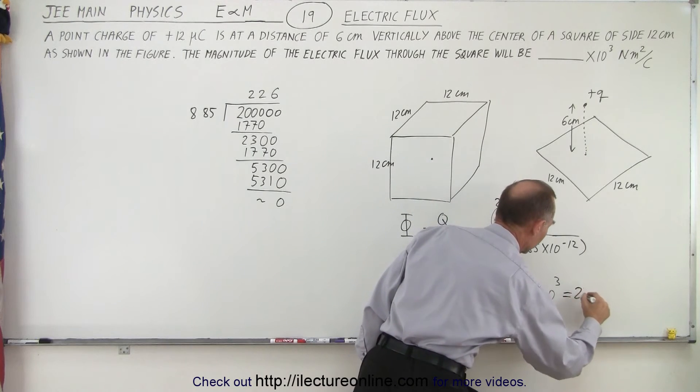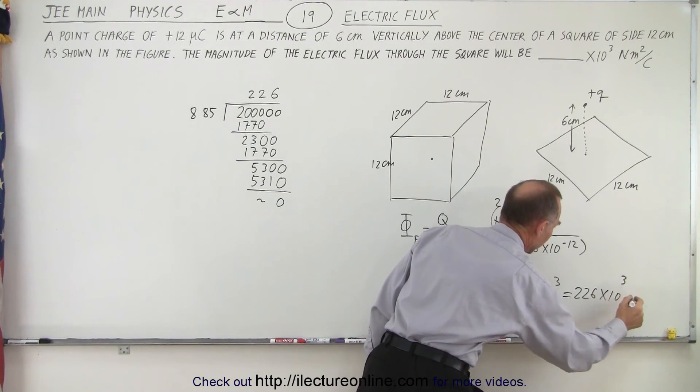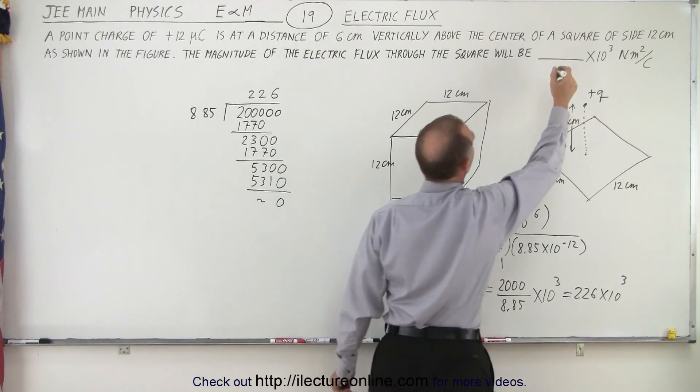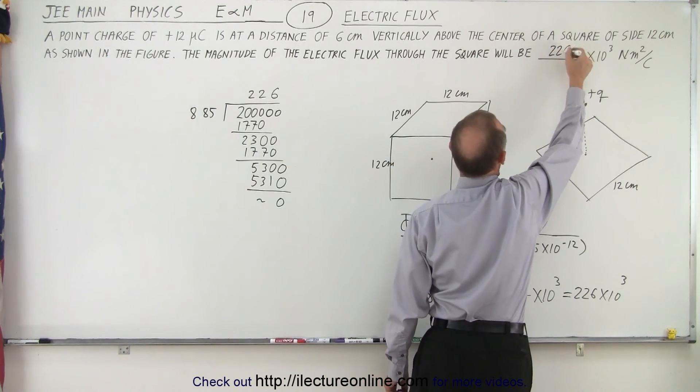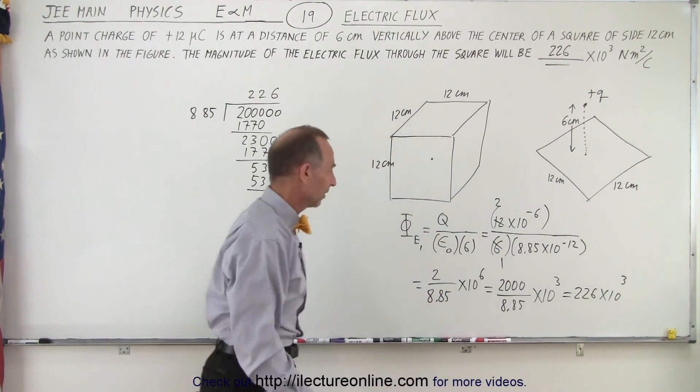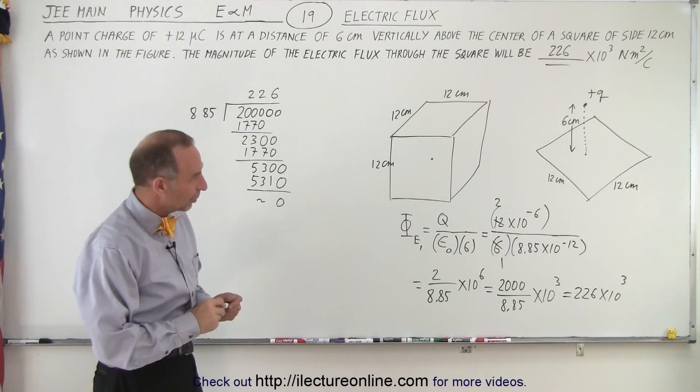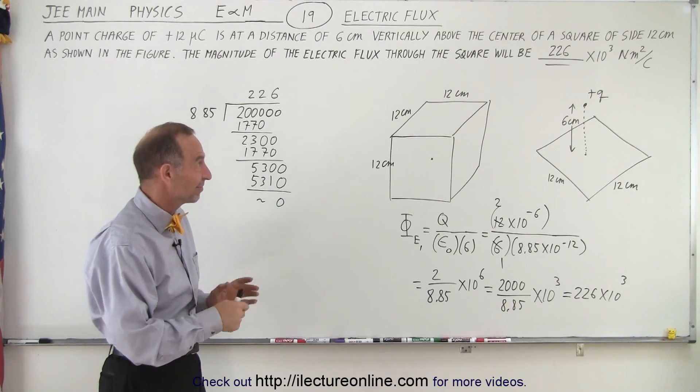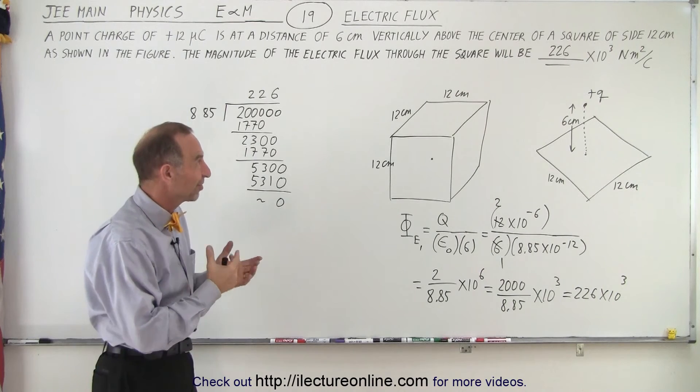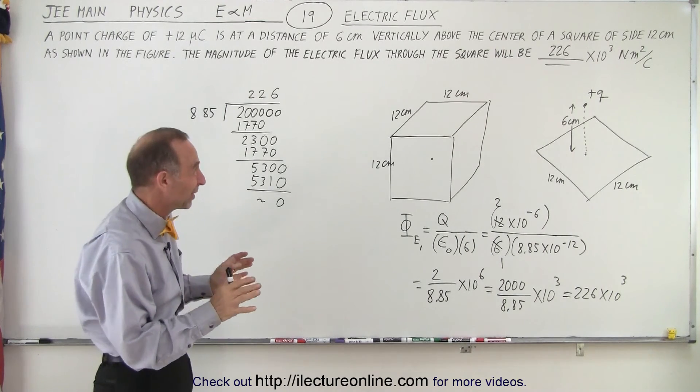So this is equal to 226 times 10 to the third. And notice the answer then would be 226. Wow, that's kind of an odd number. Normally the answers are in much smaller or much simpler formats.